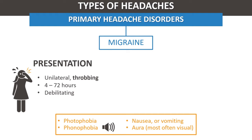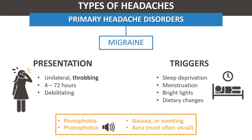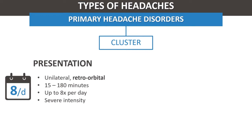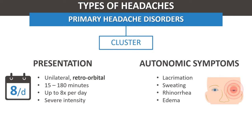Some patients have an aura, most commonly visual, with flickering lights or a scotoma. Triggers include sleep deprivation and menstruation. Cluster headaches present with severe, sharp, unilateral retroorbital pain lasting 15 to 180 minutes, associated with cranial autonomic symptoms like lacrimation or rhinorrhea. Cluster headache attacks occur between one every other day to up to eight times per day.